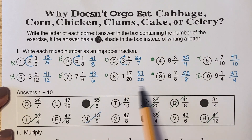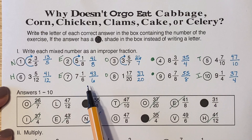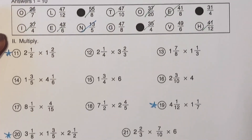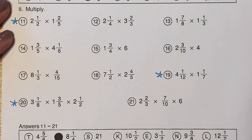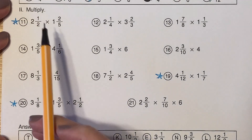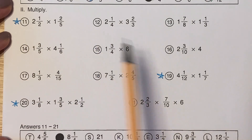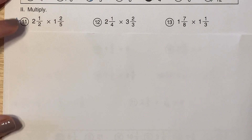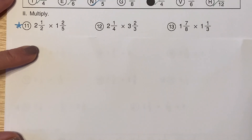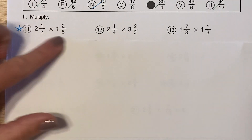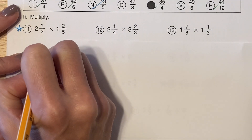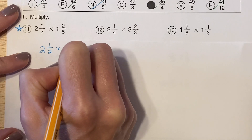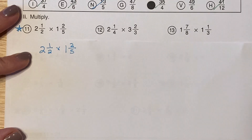Hopefully you've already done numbers 1 through 10, which was just practicing changing a mixed number to an improper fraction. Let's go ahead and do three examples from below, from 11 through 21. We're going to do mine on a separate piece of paper because there is not enough room to do all of that work here. The biggest problem with these types of problems is trying to smoosh our problems together, and when we do that we end up making mistakes.